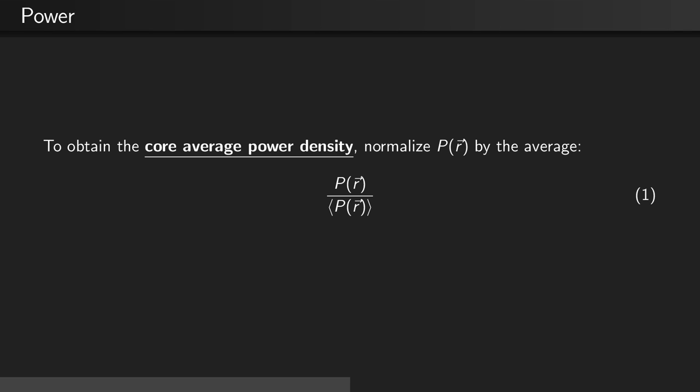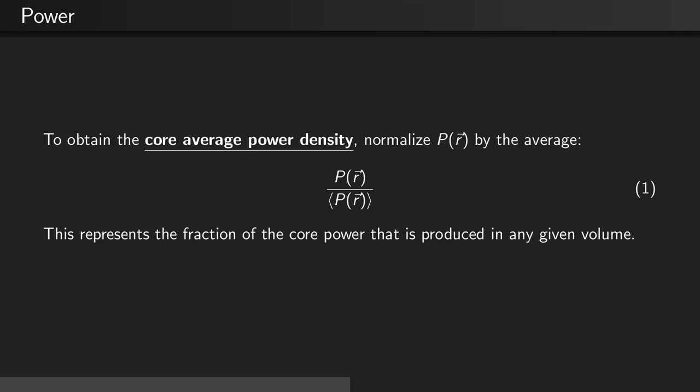To obtain the core average power density, normalize p of r by the average, or the fraction p of r divided by bracket p of r close bracket. This represents the fraction of the core power that is produced in any given volume.